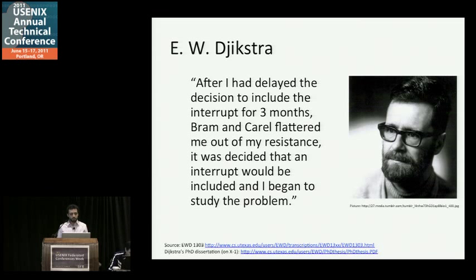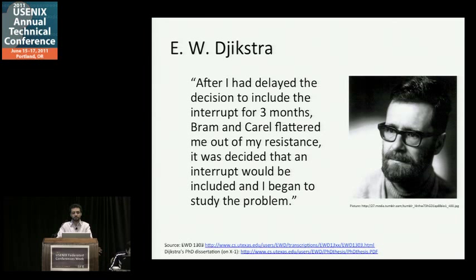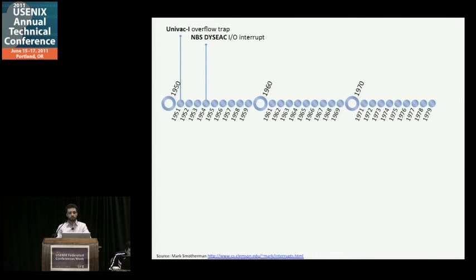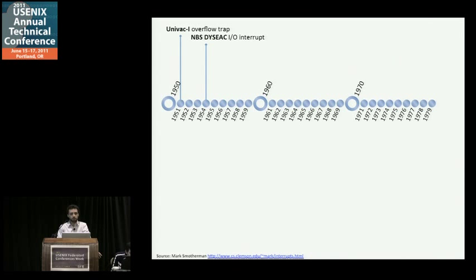Here's a revelation: computers didn't always have interrupts. Knuth credits Dijkstra with the independent invention of an interrupt system, but historically Edsger Dijkstra was actually not the first one. In 1954, the NBS DYSEAC machine was the first one to have an I/O interrupt. Traps existed before this — for example, we had the UNIVAC-1 with an overflow trap — but the first I/O interrupt is 1954.